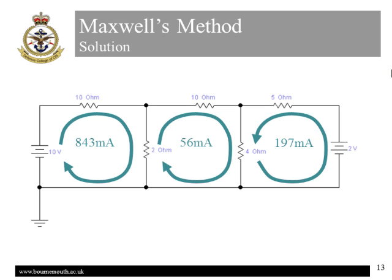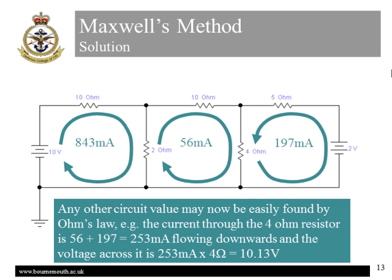Now we have solved for the circulating currents, we can find any other voltage or current in the circuit using Ohm's law. For example, the current in the 4 ohm resistor is simply the combination of I2 and I3, of 56 mA and 197 mA, making a sum total of 253 mA flowing down through the 4 ohm resistor. And equally, the voltage across the 4 ohm resistor can be found as a result of this combined current passing through the 4 ohms of 253 mA times 4, or 10.13 volts.